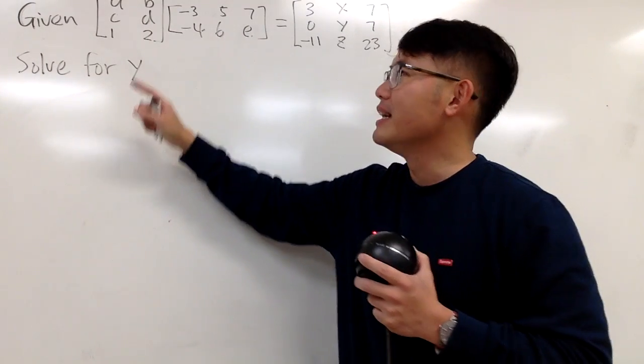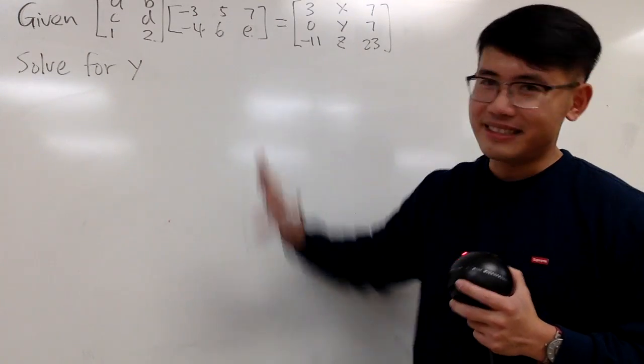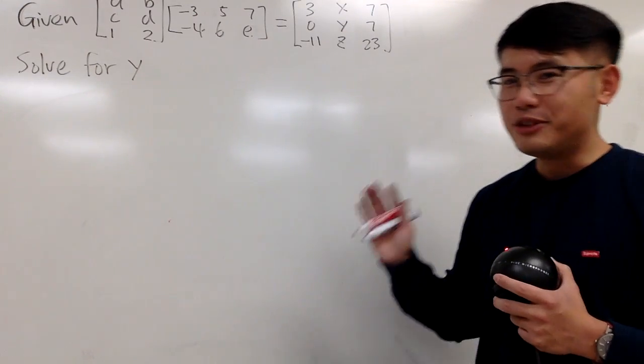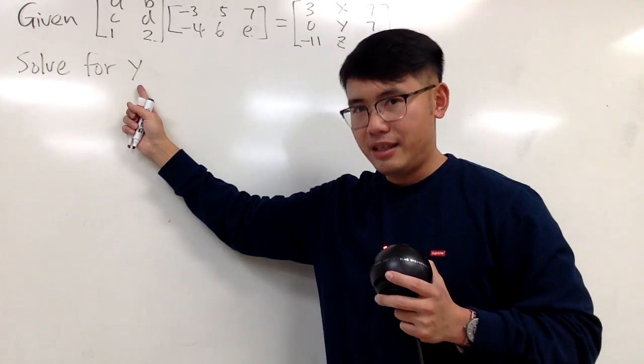We are going to multiply these two matrices, and notice that we have A, B, C, D, and also E. This E is not 2.718 or that. It's just an unknown. And then we have the X, Y, Z, and our goal is to find out what Y is.